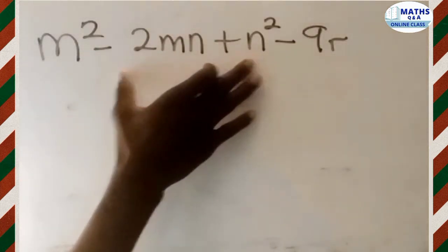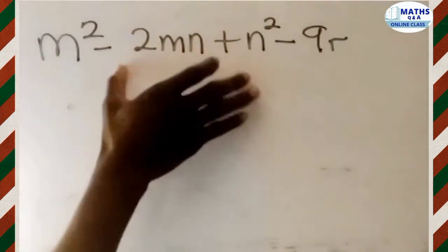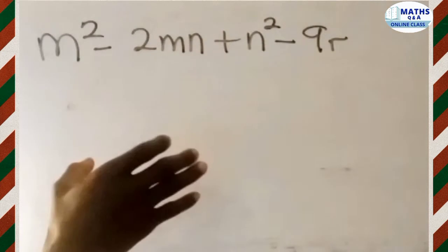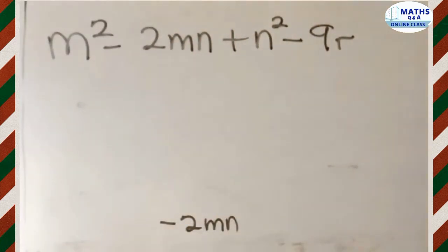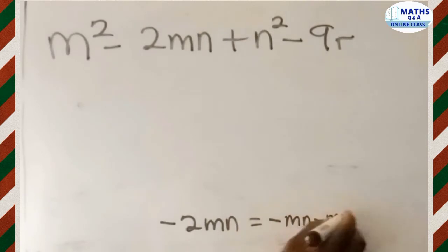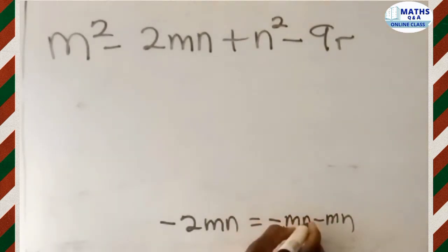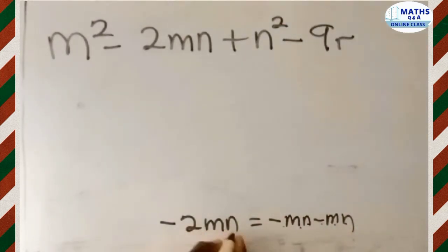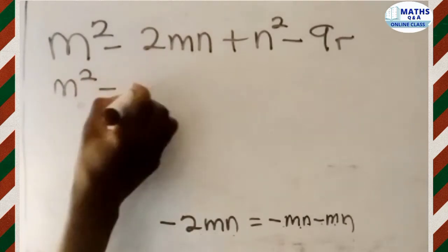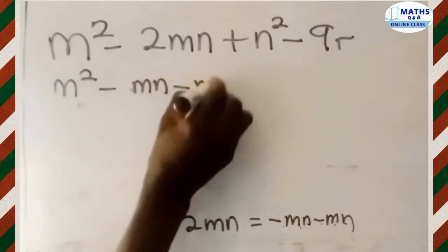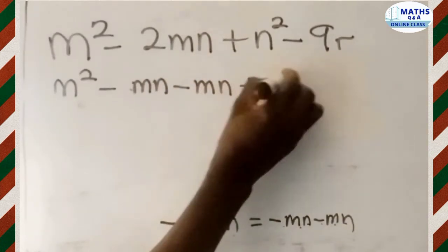If we focus on those 3 terms, we expand them to get 4 terms — that is the first step. We expand the negative 2MN term. Negative 2MN can be rewritten as negative MN minus MN. So we now have M squared minus MN minus MN plus N squared.